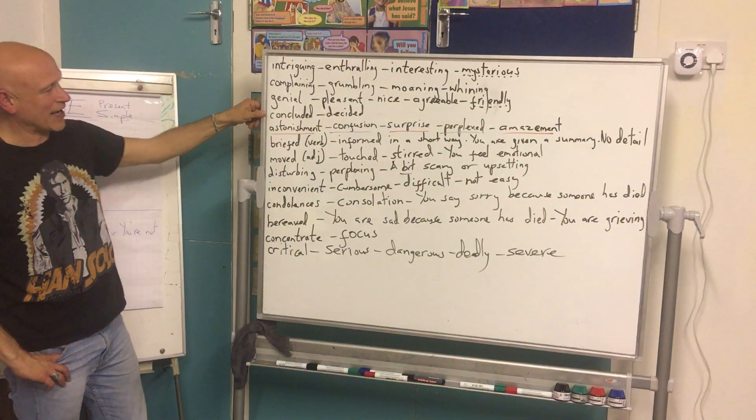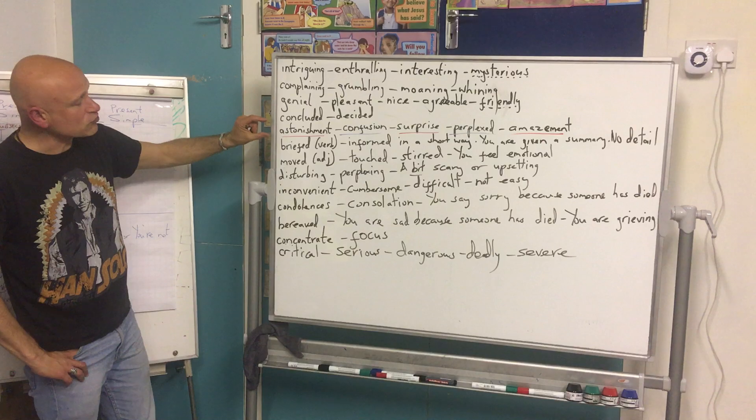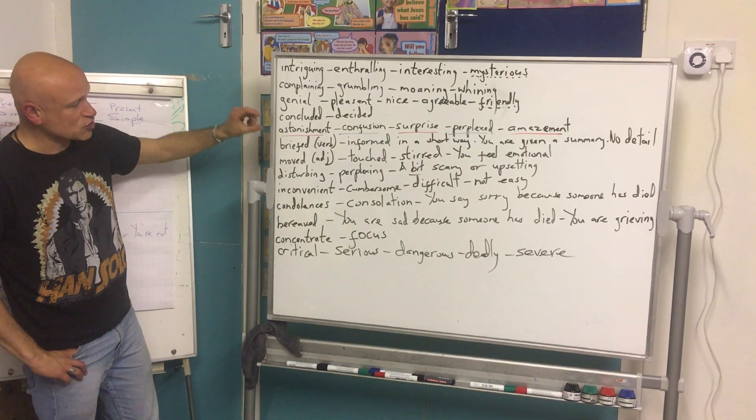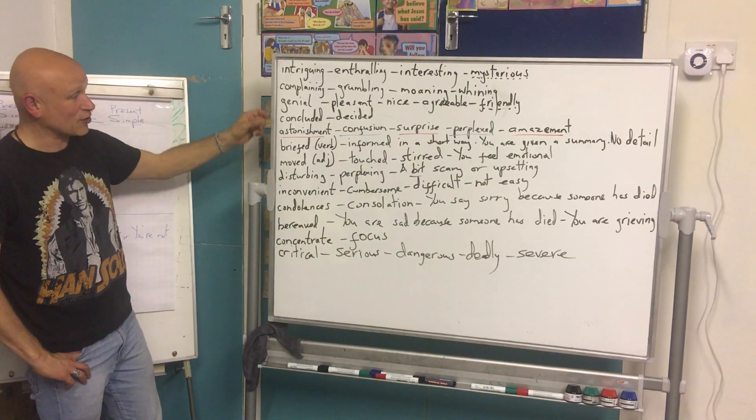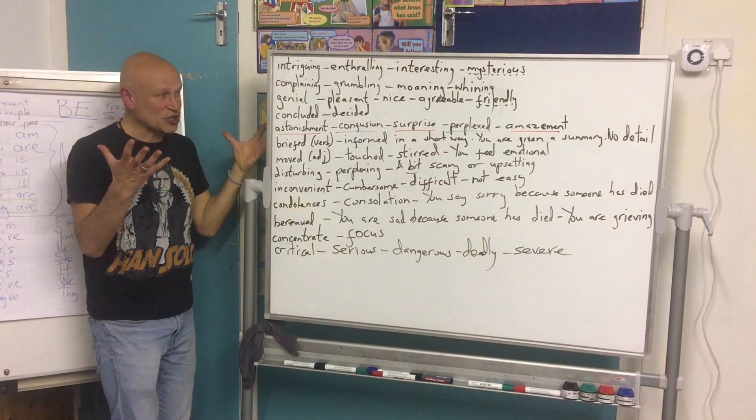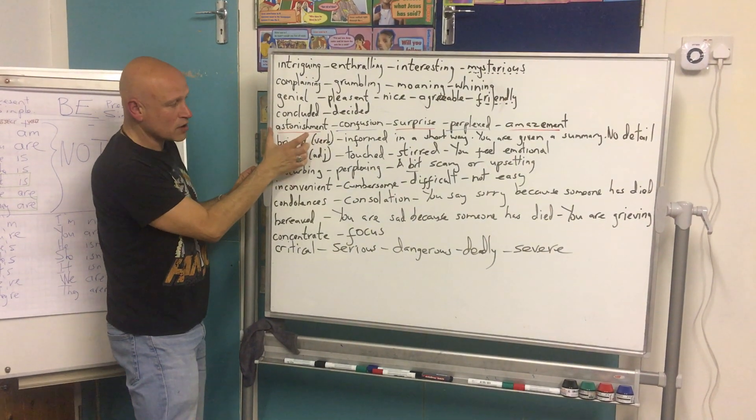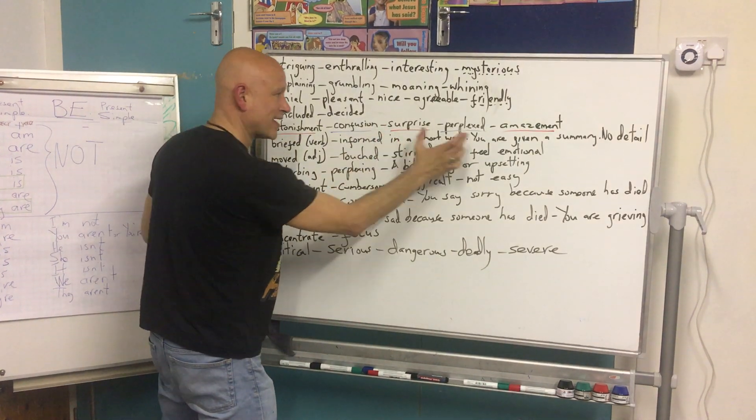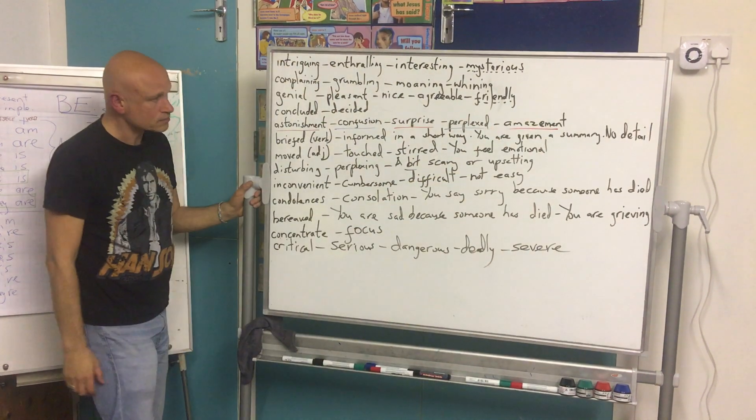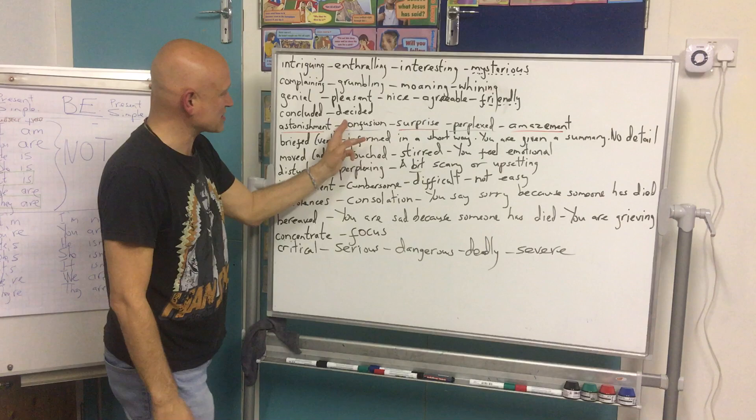Now, if you're astonished, or if something is astonishing, or there is astonishment - here that's the noun - the best synonyms are things like surprise or amazement. Perplexed - confusion. Perplex, perplexed - it really works further down here.